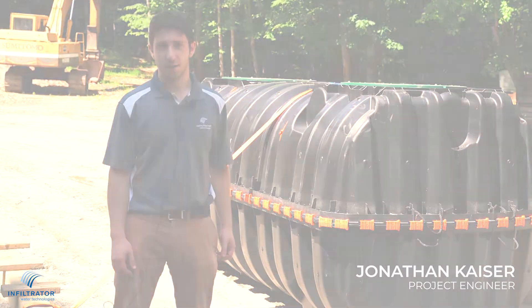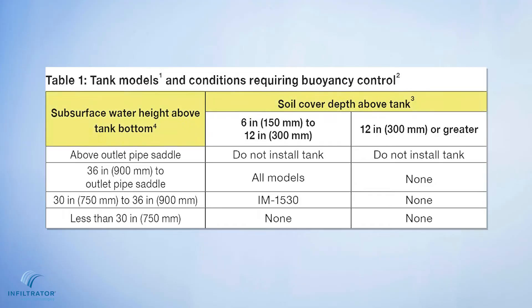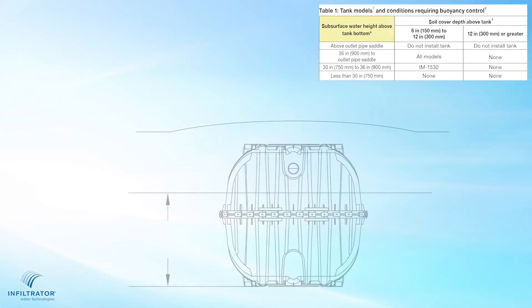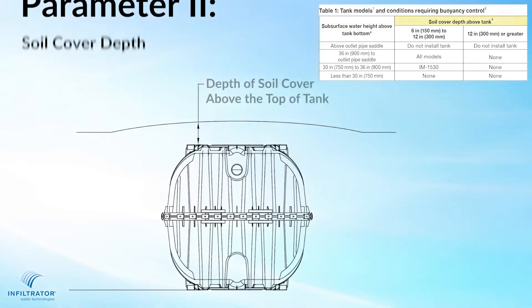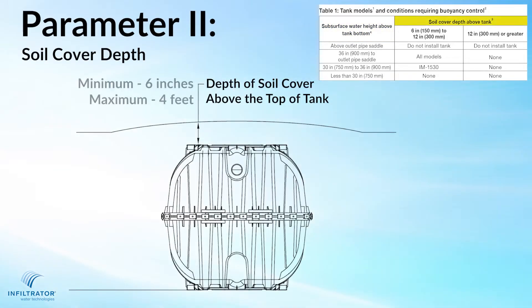There are two parameters to focus on when determining whether your Infiltrator tank requires buoyancy control. The first parameter is the subsurface water height, or the groundwater table above the bottom of the tank, and the second parameter is the soil cover depth above the top of the tank.